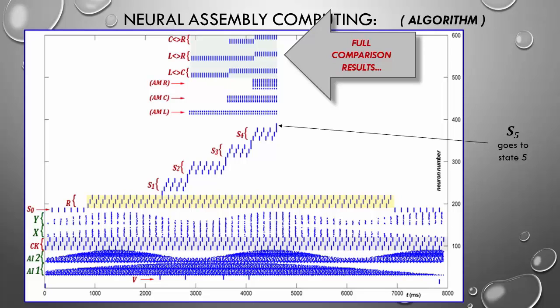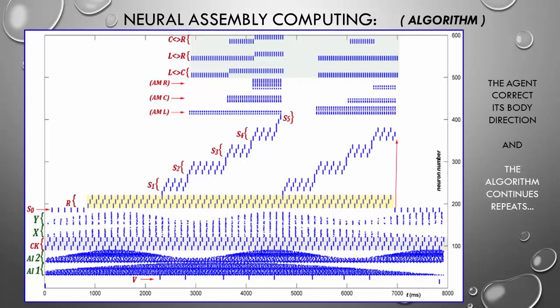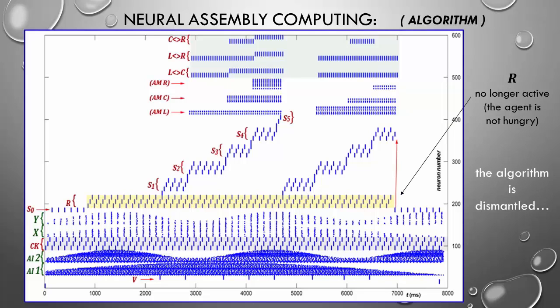Based on these comparisons, this algorithm can command hierarchically inferior central pattern generators, CPGs. By commanding CPGs, the agent can move its body to the right direction. The algorithm proceeds while the hungry state is active. As we can see in this simulation, if something dismantles the R loop, the algorithm stops.